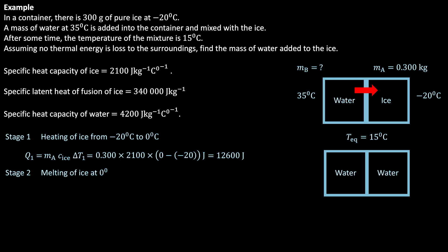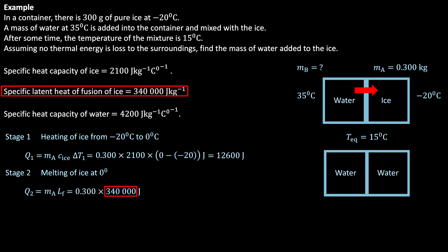Stage 2 is about melting the ice — basically converting 0.300 kg of ice at 0 degrees Celsius into water at 0 degrees Celsius. Let the amount of heat absorbed in this stage be Q2. Q2 equals MA times LF, where LF is the specific latent heat of fusion of ice. Here MA equals 0.300 kg and LF is 340,000 joules per kg, so Q2 equals 102,000 joules.